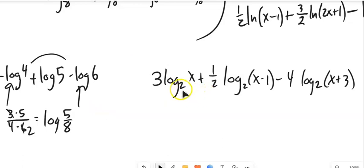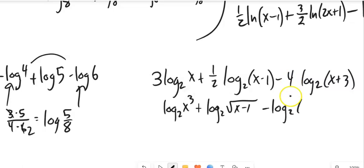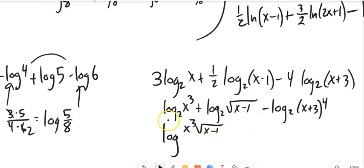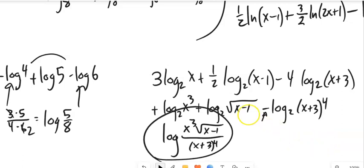This only works when all terms have the same base. For 3·log base 2 of x plus 1/2·log base 2 of (x − 1) minus 4·log base 2 of (x + 3): the coefficient 3 becomes an exponent, giving x cubed; 1/2 becomes a square root; and 4 becomes the fourth power. Positive terms go in the numerator, the negative term goes in the denominator: log base 2 of (x³ · √(x−1)) / (x+3)⁴. That is condensed.